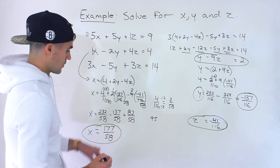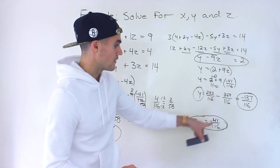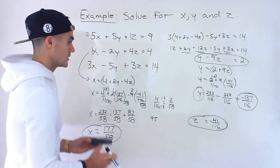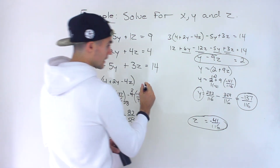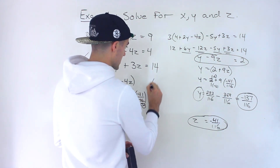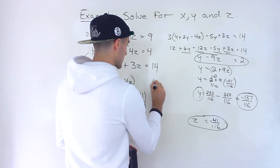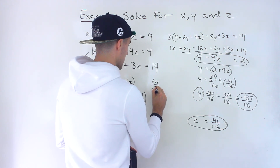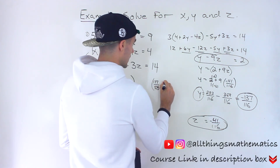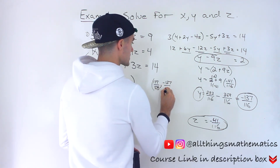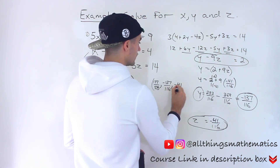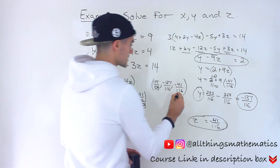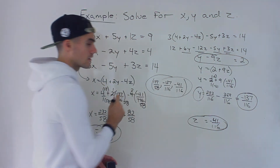So that's our unique solution. These lines intersect at the point x equals 177 over 58, y equals negative 137 over 116, and z equals negative 41 over 116. That's the final answer.